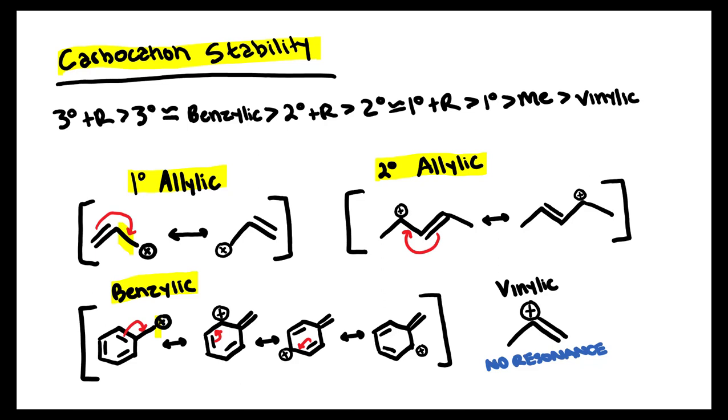Finally, the least stable carbocation is vinylic, where the carbocation is directly on top of the double bond, and this does not have resonance. A lot of students confuse allylic and vinylic carbocations and mistakenly think that vinylic carbocations have resonance when they do not.